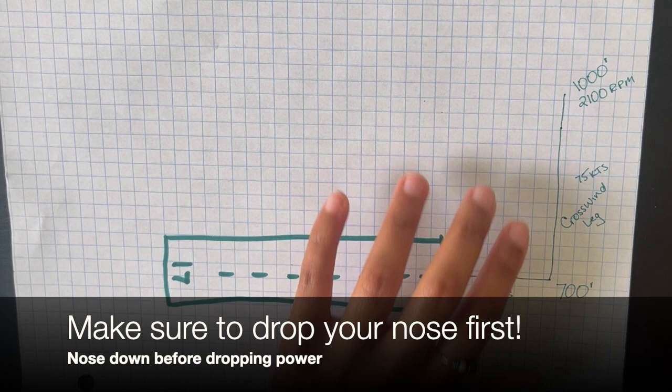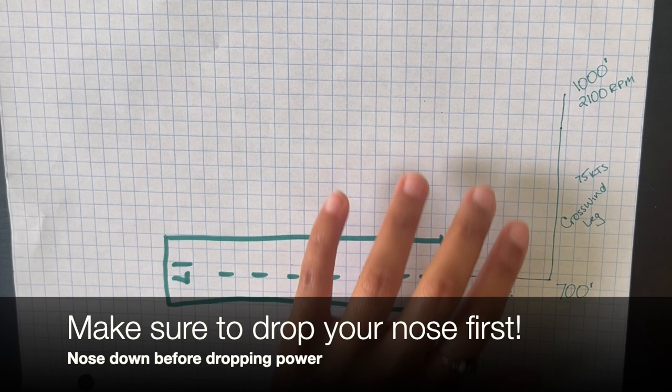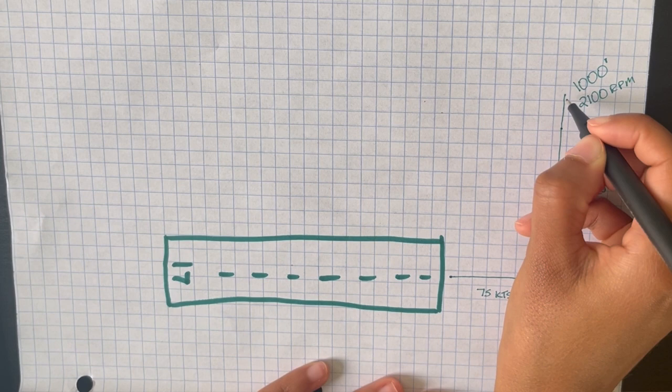Once you reach a thousand feet you are going to pull your power back to about 2100 and you're going to drop your nose to make sure you are no longer climbing. Around this point you'll have to use visuals to assess when you need to turn.